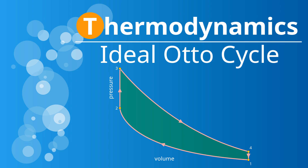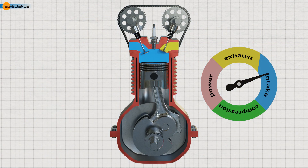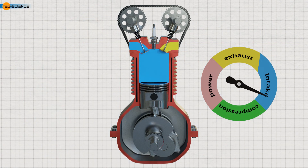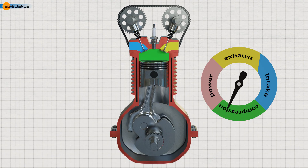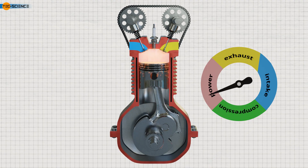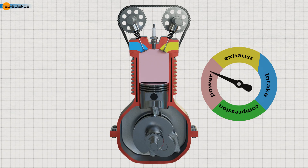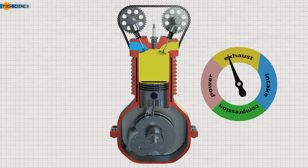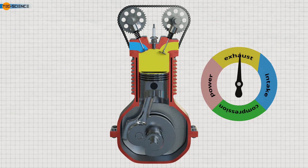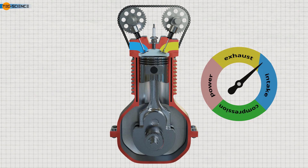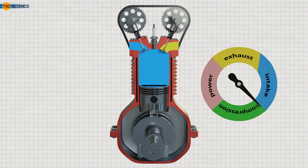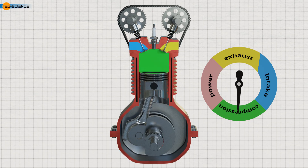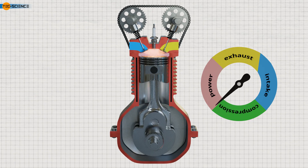Ideal Auto Cycle of the Gasoline Engine. In the linked video, we explained the working principle of a four-stroke engine in detail. In this video, we will focus on the thermodynamic processes in a four-stroke engine, specifically examining the gasoline engine. As the name implies, gasoline is used as the fuel in gasoline engines. Since the gasoline engine is based on the inventor Nicholas Otto, it is also called the auto engine and the thermodynamic cycle is called the auto cycle.